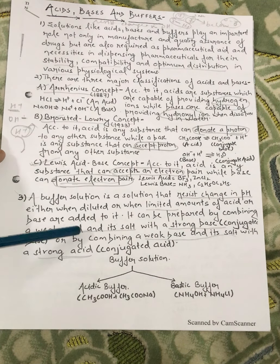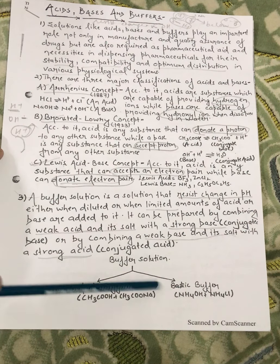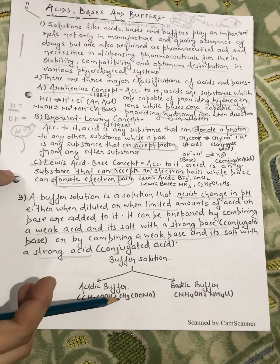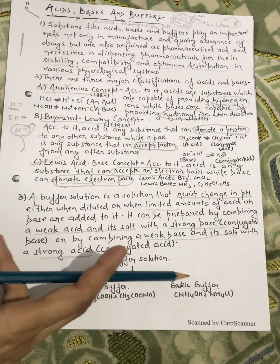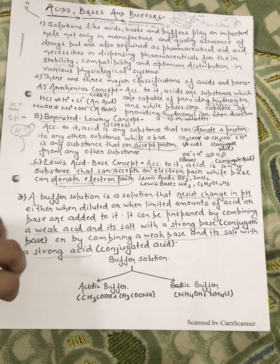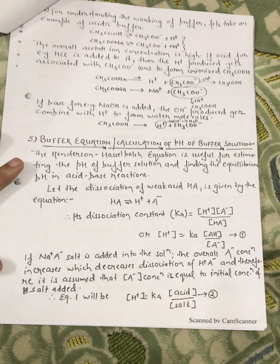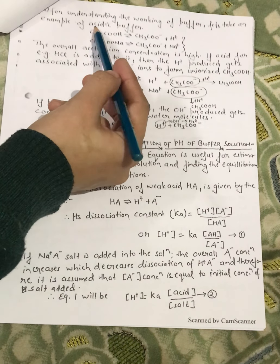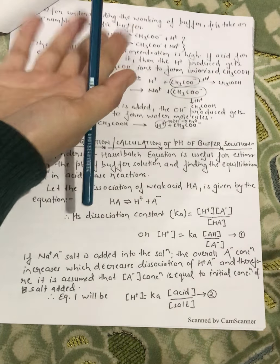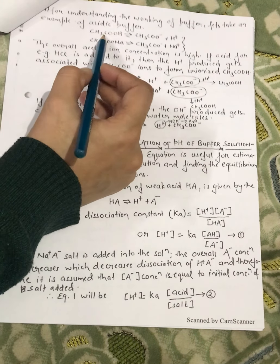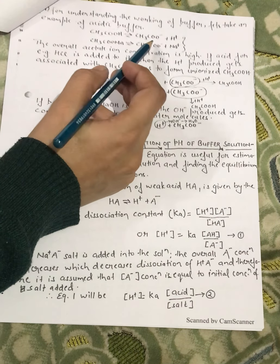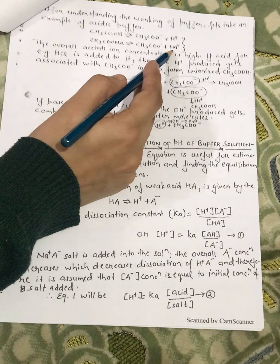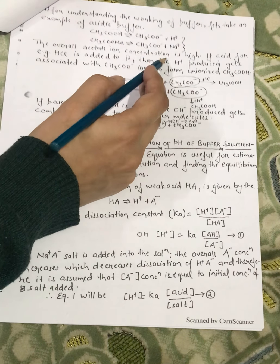Our buffer solution can be either an acidic buffer or a basic buffer. An acidic buffer example is acetic acid plus sodium acetate. A basic buffer example is ammonium hydroxide with ammonium chloride. For understanding the working of a buffer, let's take an example of an acidic buffer. In acetic acid, we have acetate ions and hydrogen ions, and in sodium acetate, we have acetate ions and sodium ions — so the overall acetate ion concentration is high.